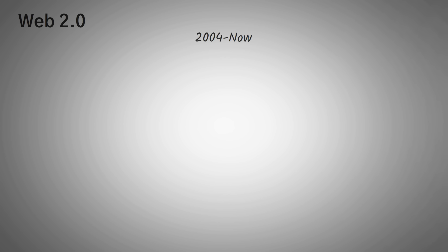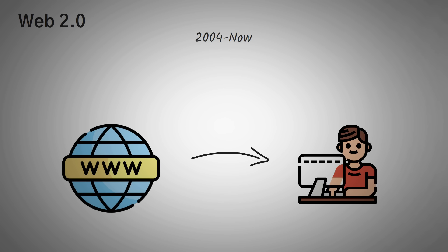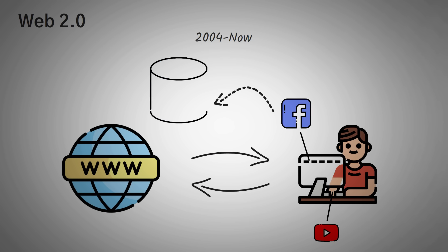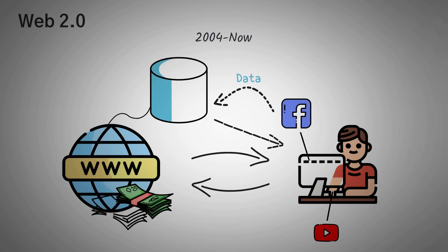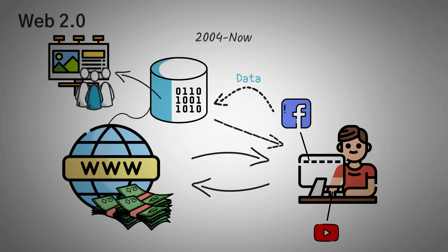Next, we have Web 2.0, from around 2004 until now. During this time, the web evolved a lot, but one of the biggest changes was the interactivity of the internet. This meant that not only did we get information from pages, but web pages started getting information from us. As we viewed Facebook, YouTube, and performed Google searches, these centralized companies started collecting data about us so that they could serve us better content, which in turn would make us stay on their websites longer. This meant more money for them, but eventually they realized they could package up all the data they had collected on us and sell it to advertisers.